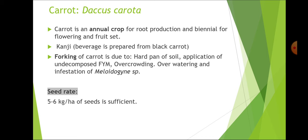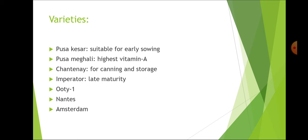Seed rate for carrot is 5 to 6 kg per hectare. Important varieties include Pusa Kesar, suitable for early sowing; Pusa Meghali, which has the highest vitamin A content; Chantanay, suitable for canning and storage and a European or temperate variety; Imperator, for late maturity and also a European variety; and Ooty 1, Nantes and Amsterdam, which are all temperate varieties of carrot.